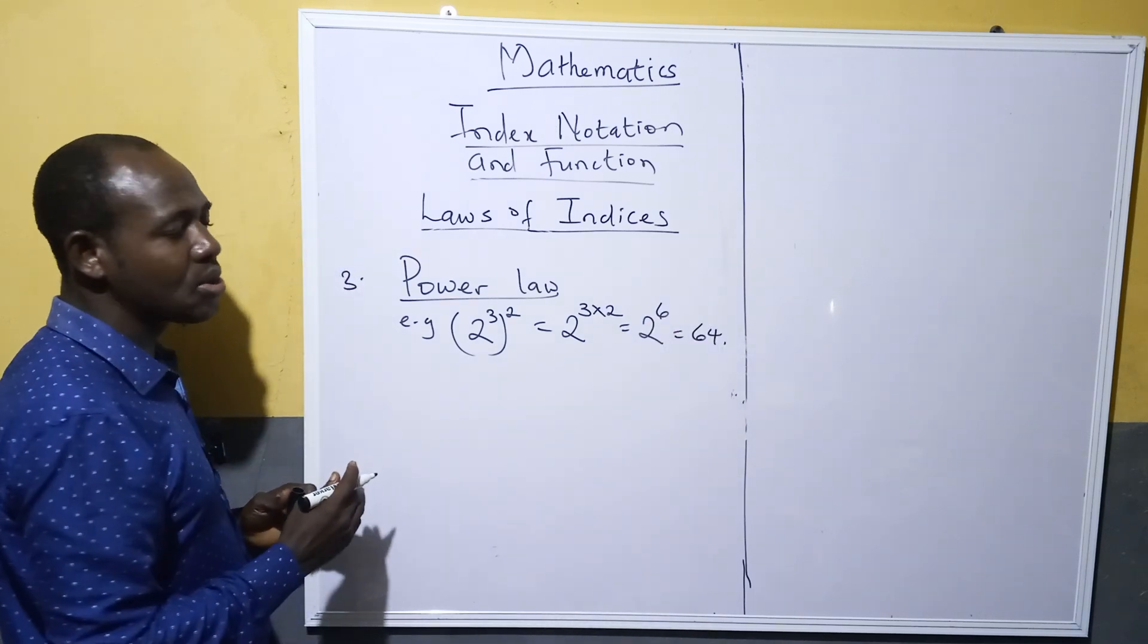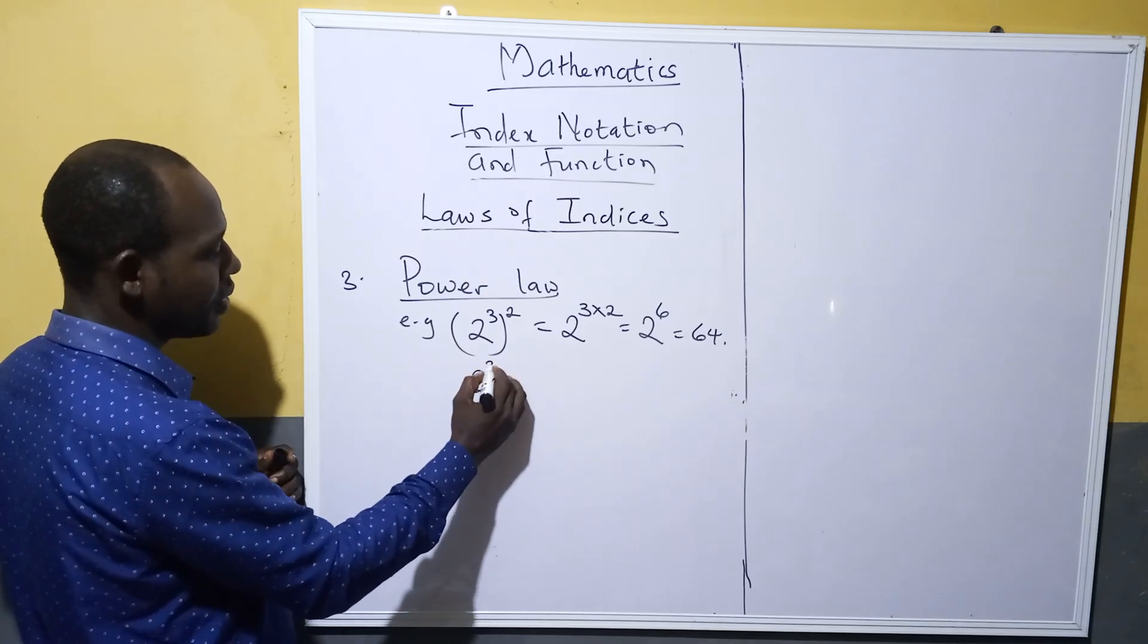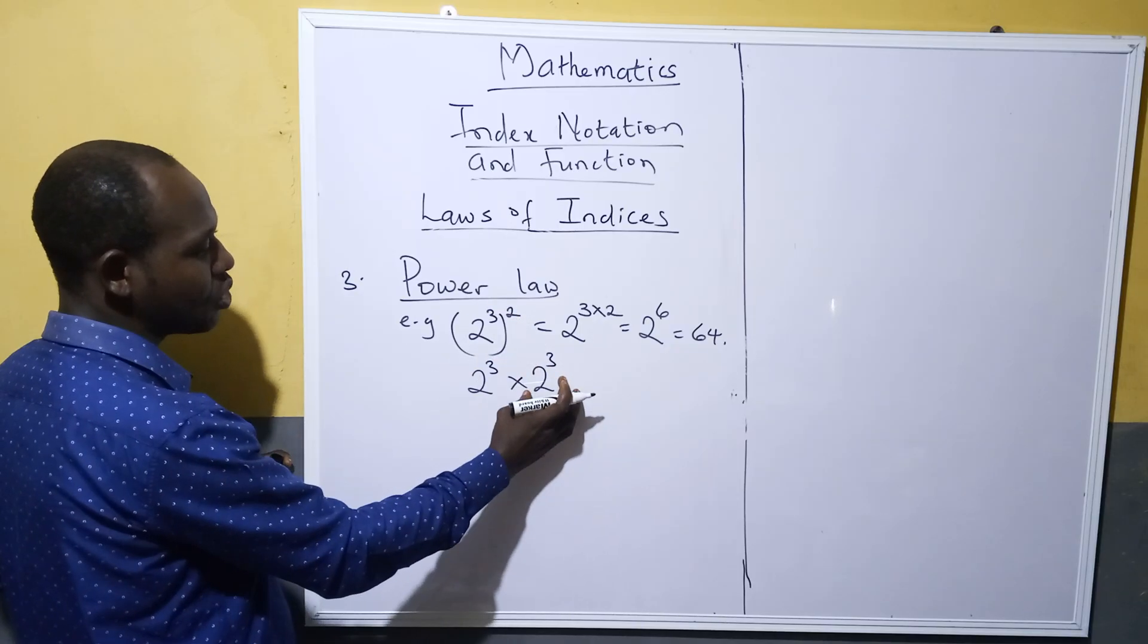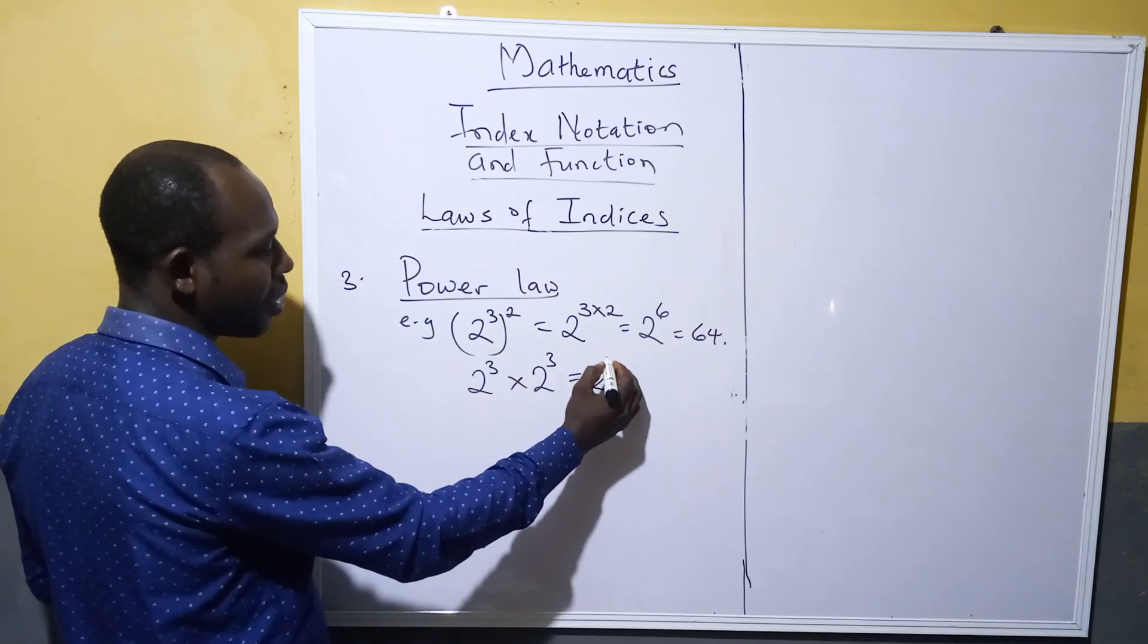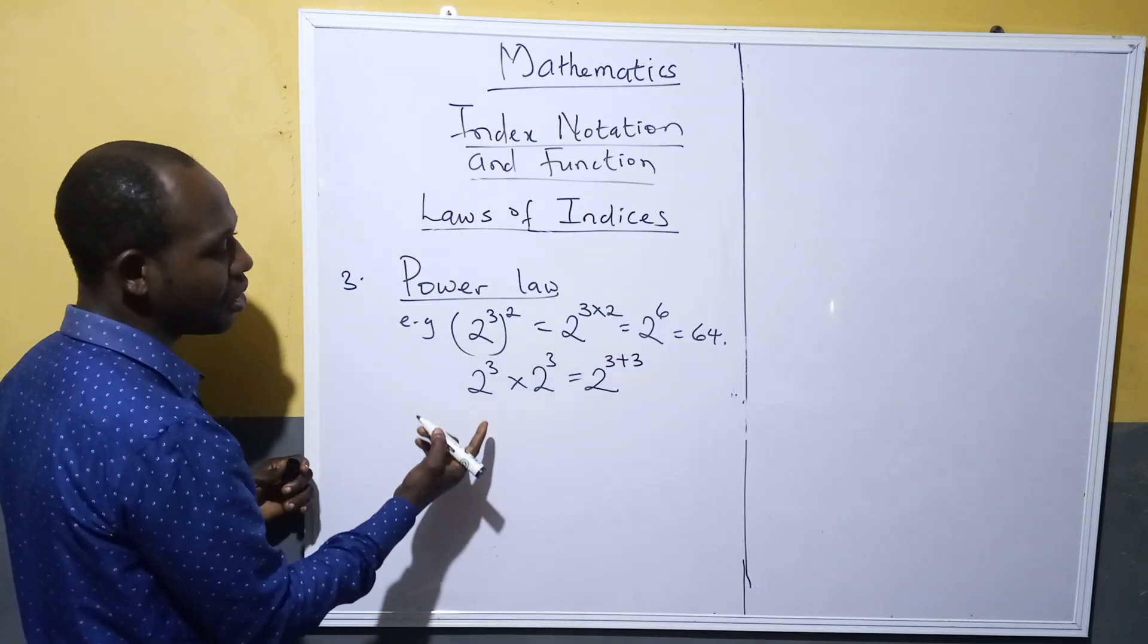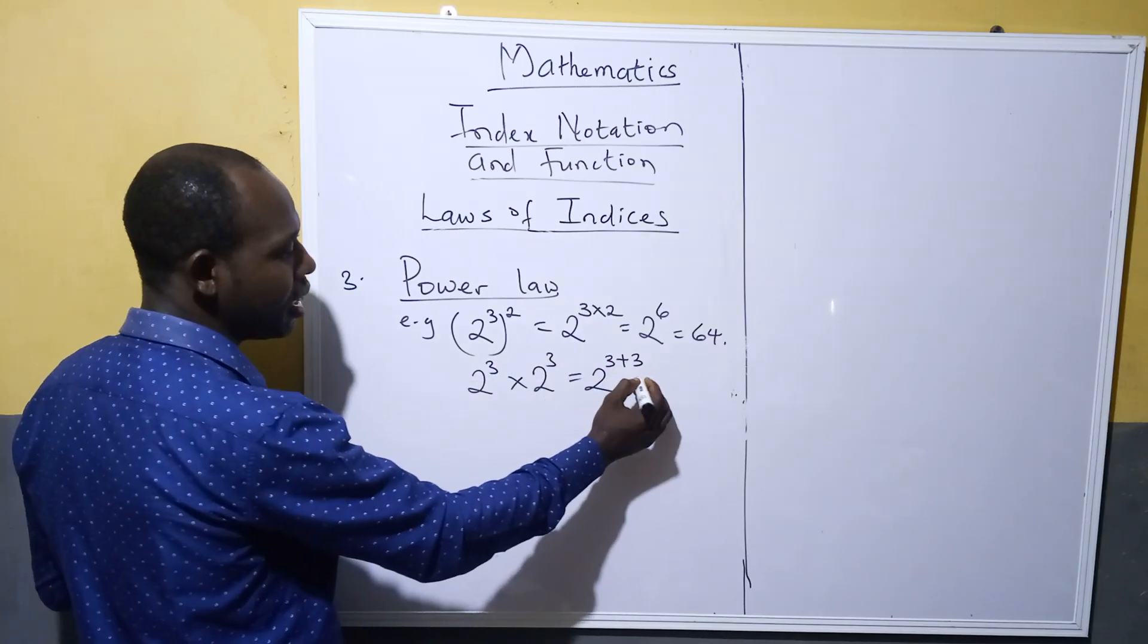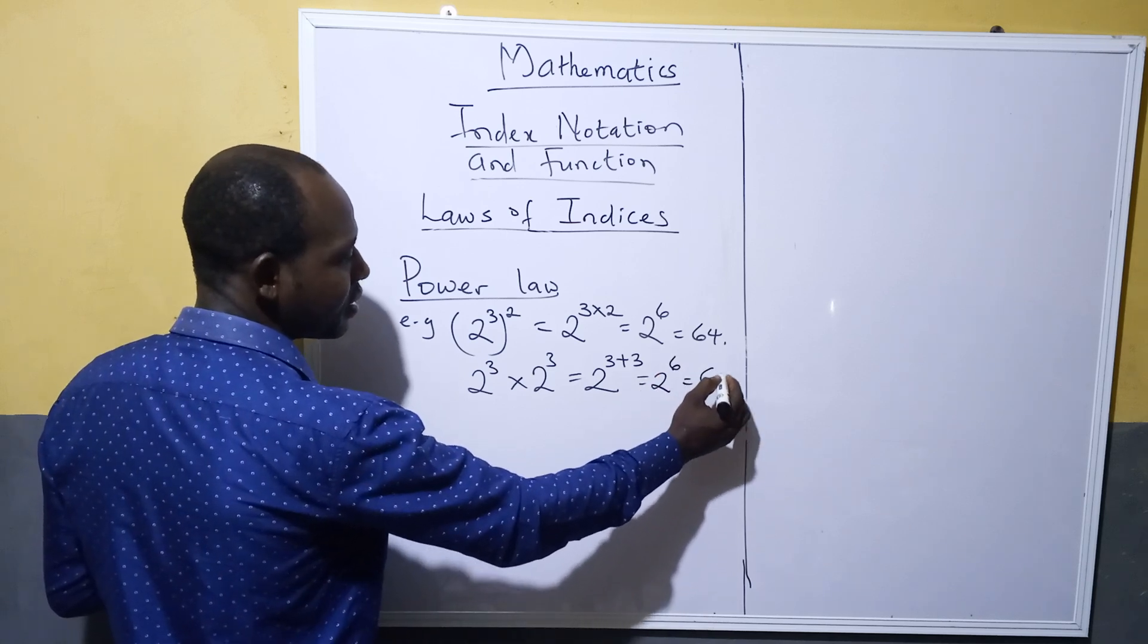Now you can also adopt multiplication law in such a way: you have 2 raised to power 3 times 2 raised to power 3, since you square this one and then this one. It becomes 2 raised to power 3 plus 3, because multiplication law states that when you have the same base, then the powers should be added. That is 2 raised to power 3 plus 3, which becomes 2 raised to power 6, simply 64.